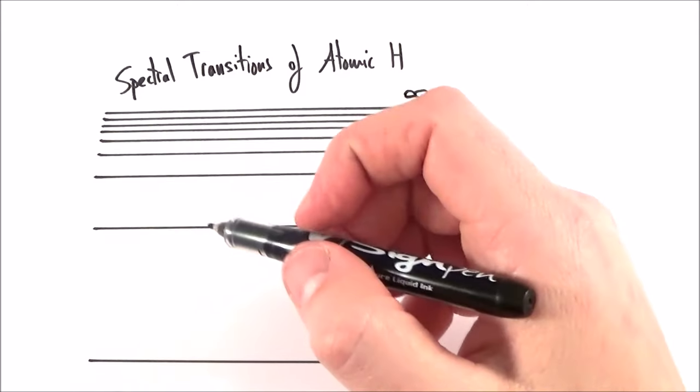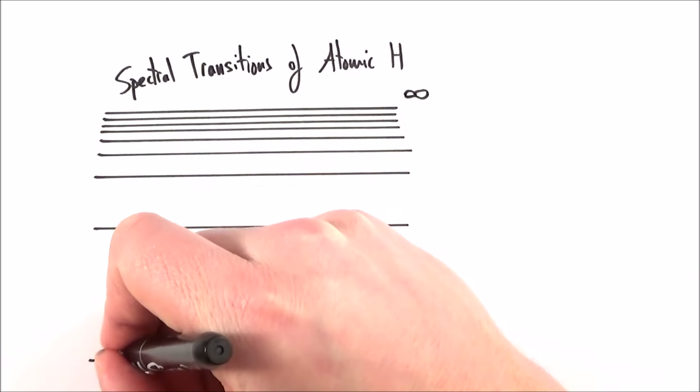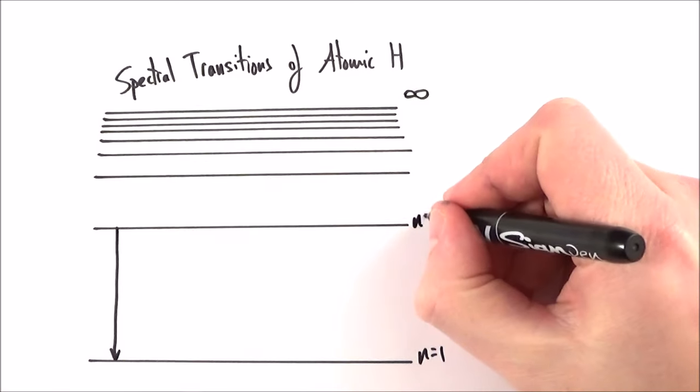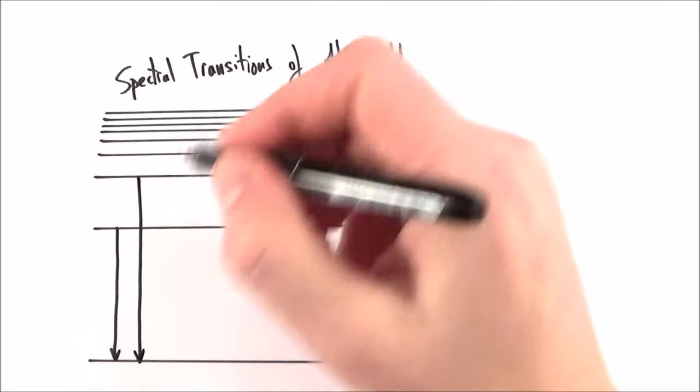As we look at all the things that could drop down to the ground state, we can have things that move from n equals 2 down to the ground state, or perhaps n equals 3, or 4, or 5.